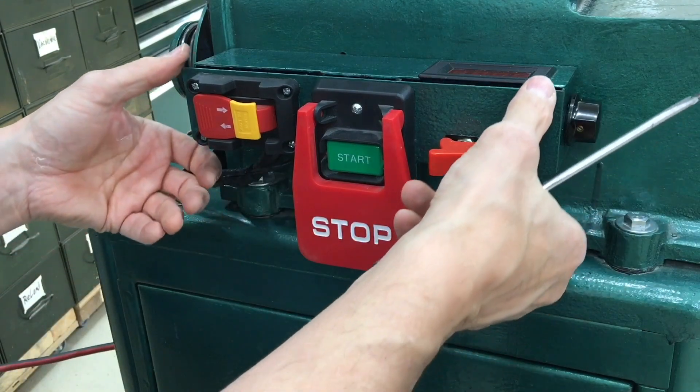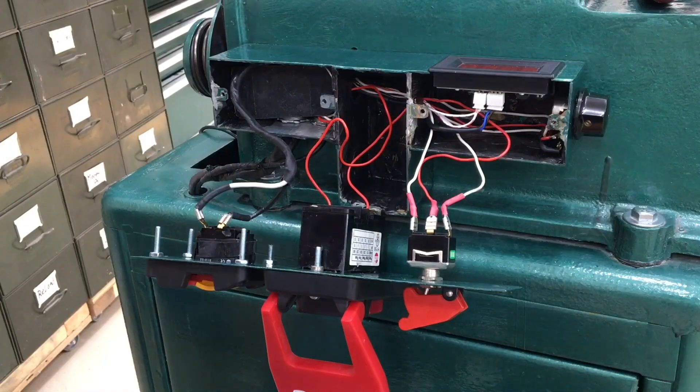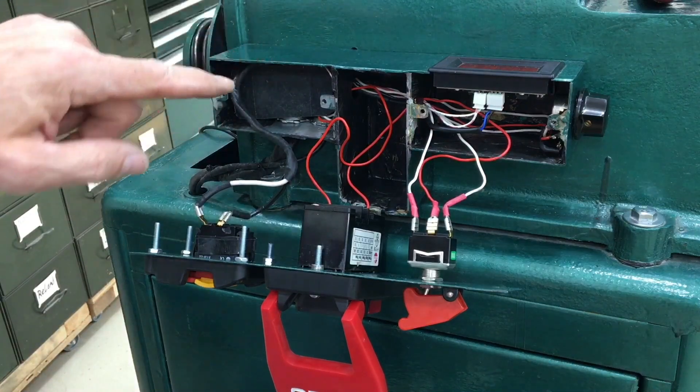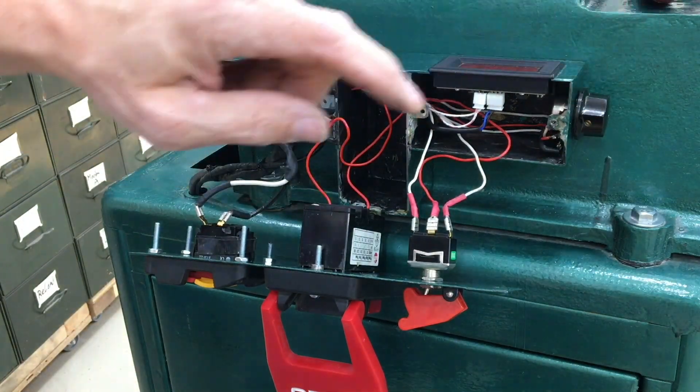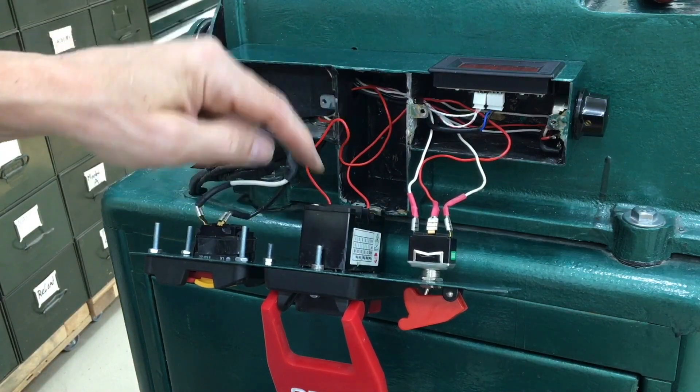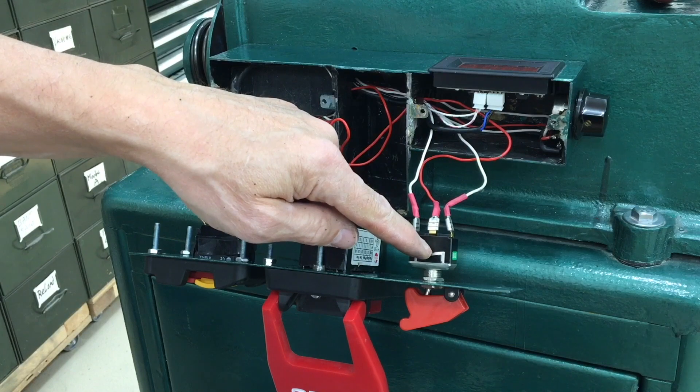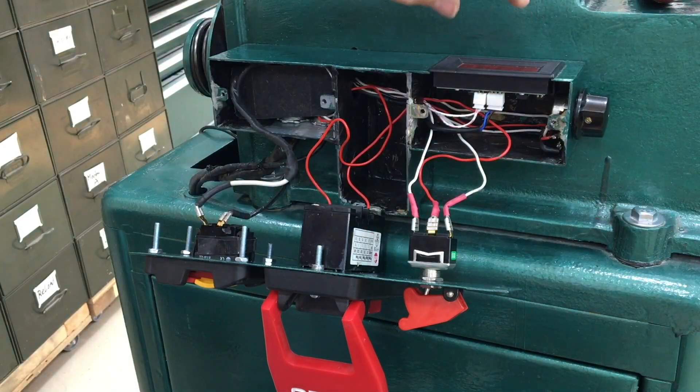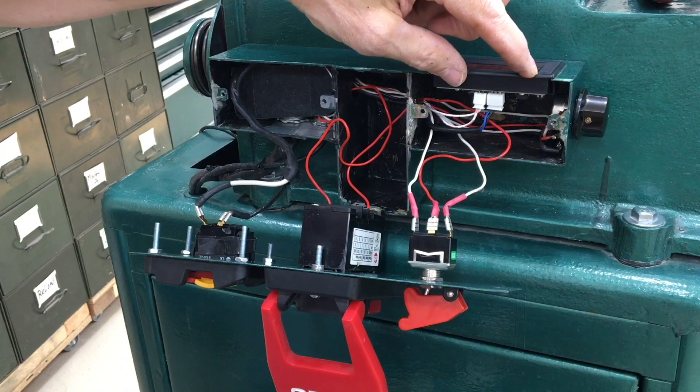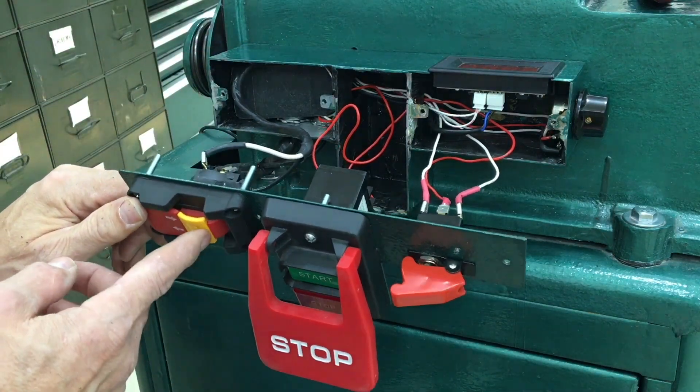I'm going to open up the control panel just to get a view of what it looks like in here. I brazed together three metal switch boxes just trying to make this thing as compact as I could. Here is the paddle switch, the forward and reverse switch, there's the potentiometer, and the tachometer display. The 120 AC power switch is right here.